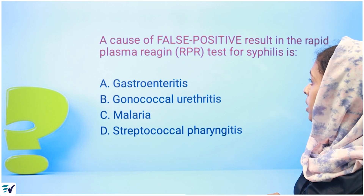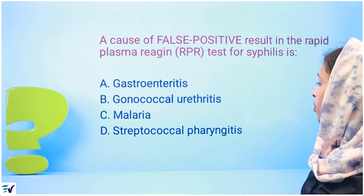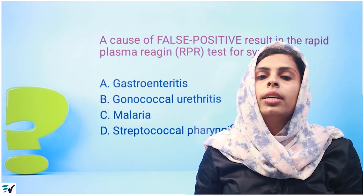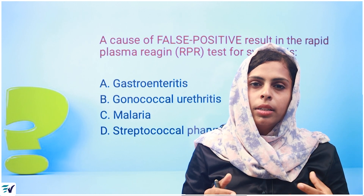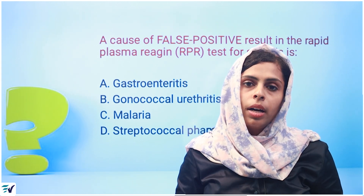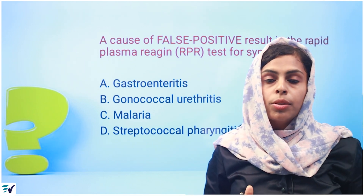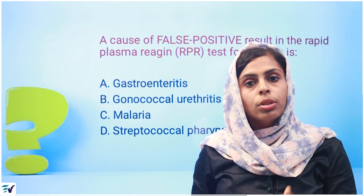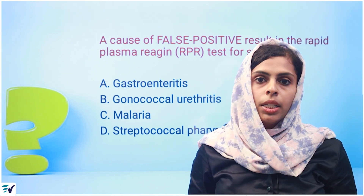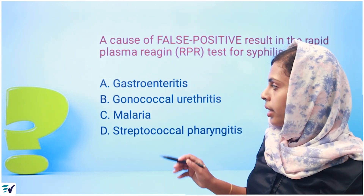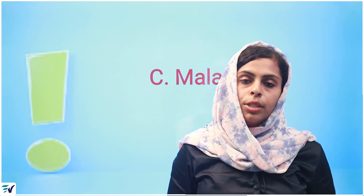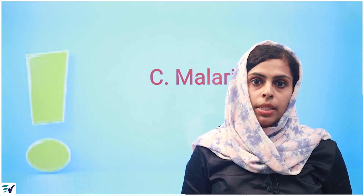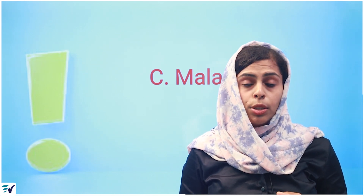Next question: false positive results in rapid plasma reagin (RPR) test for syphilis. Reagin antibodies are also known as homocytotropic antibodies — an allergic reaction or response to a non-specific antibody. This is a screening test for syphilis. False positives can occur in conditions like malaria, SLE, leprosy, infectious mononucleosis, and hepatitis A.